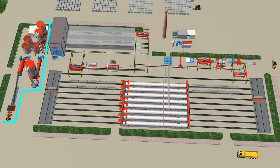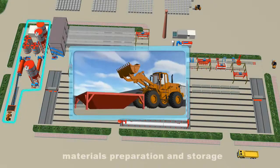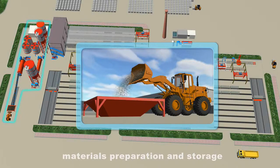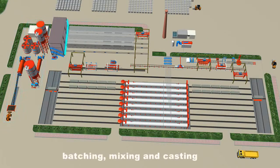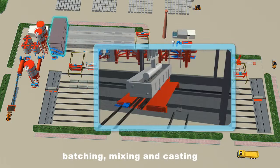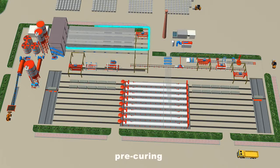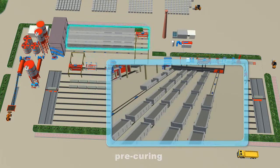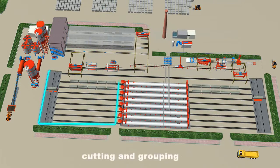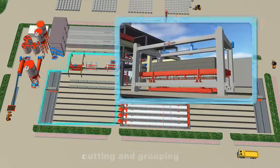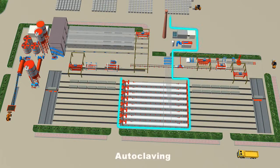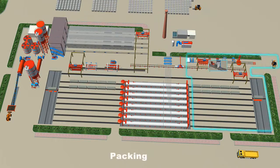The AAC production process includes six parts: materials preparation and storage, batching, mixing and casting, pre-curing, cutting and grouping, autoclaving, and packing.